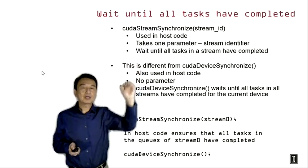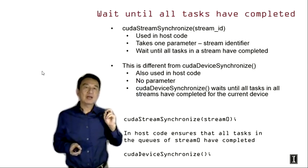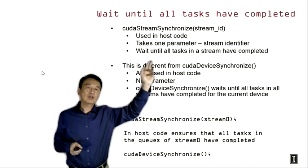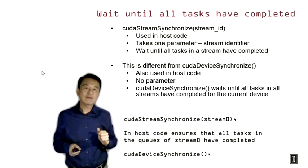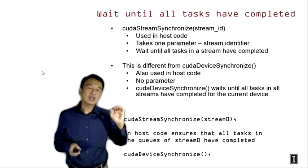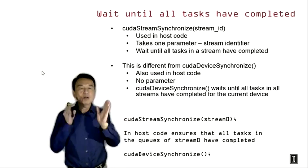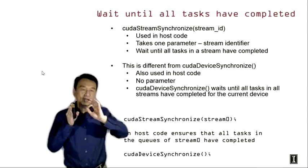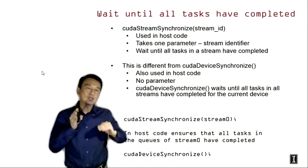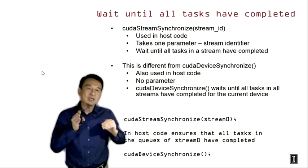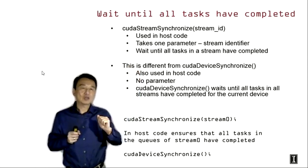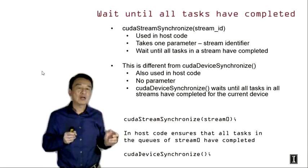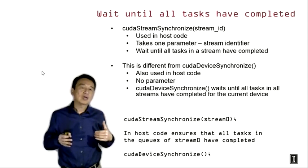I want to mention one important set of API functions you'll be using for asynchronous data transfers. The first is cudaStreamSynchronize. This function takes one input parameter — the stream identifier — and forces the host code to wait until all tasks in that stream have completed. This is used for things like message-passing coding or CUDA implementations where you need to ensure the host waits for all stream operations before continuing. For example, calling cudaStreamSynchronize with stream zero forces the host to wait until all tasks in stream zero's queue complete.